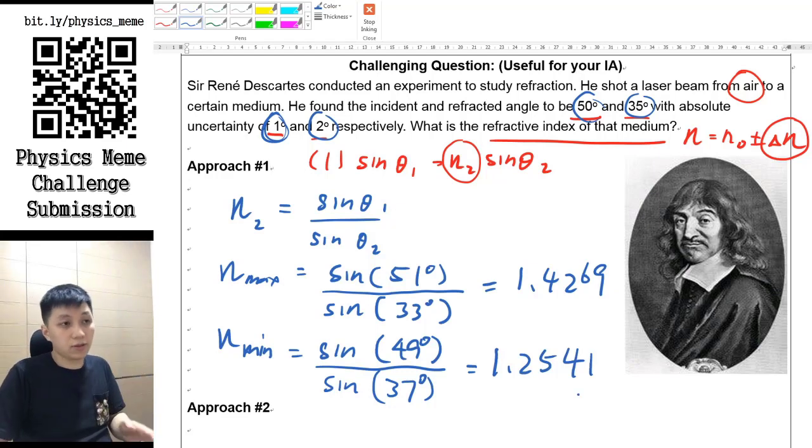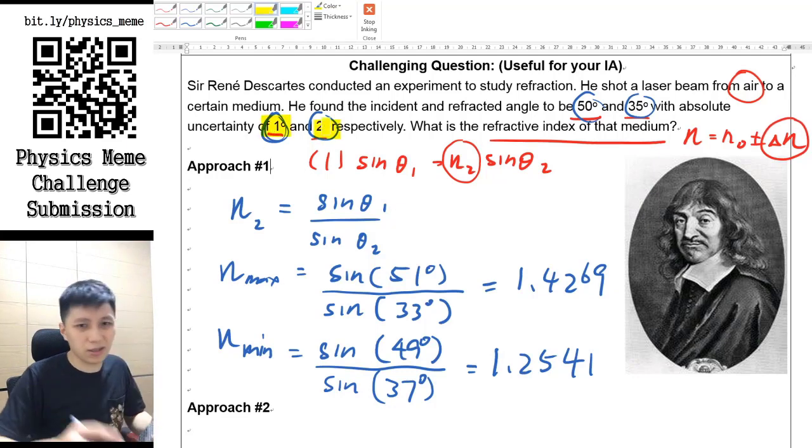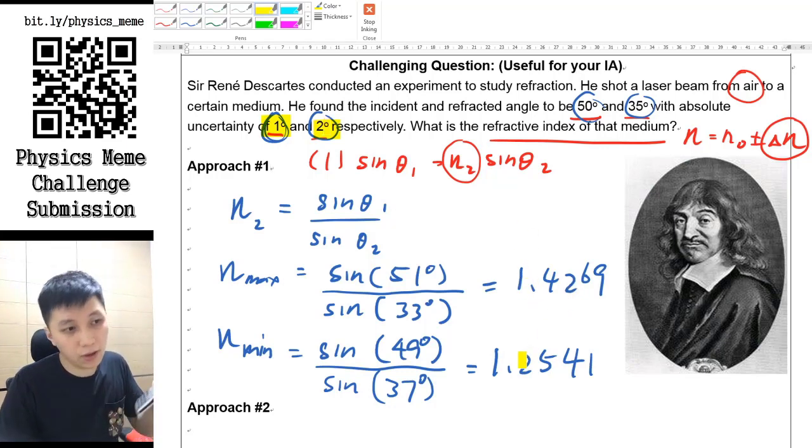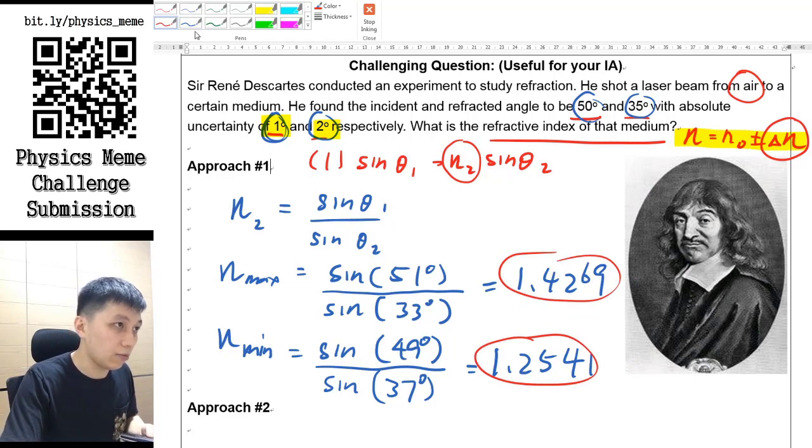So you can see that it's a huge difference. You may think that 1 degree, 2 degrees doesn't seem to be a lot, but in fact this is a huge difference because if you look at the number it's 1.4 and 1.2. So if you try to really express the answer in the form of n₀ ± Δn, what you can do is by looking at this value and this value.